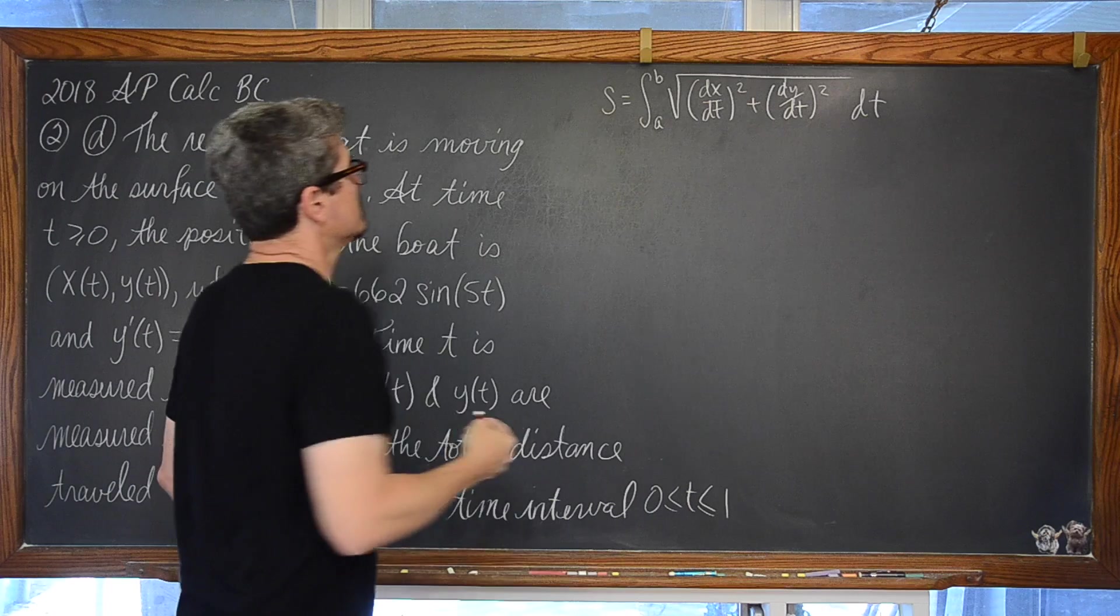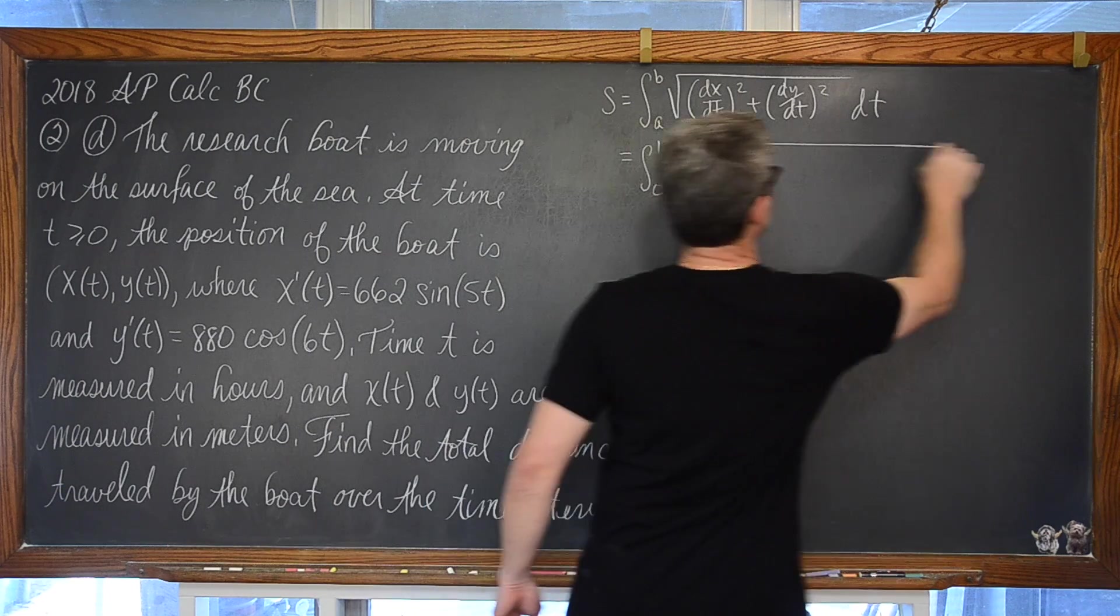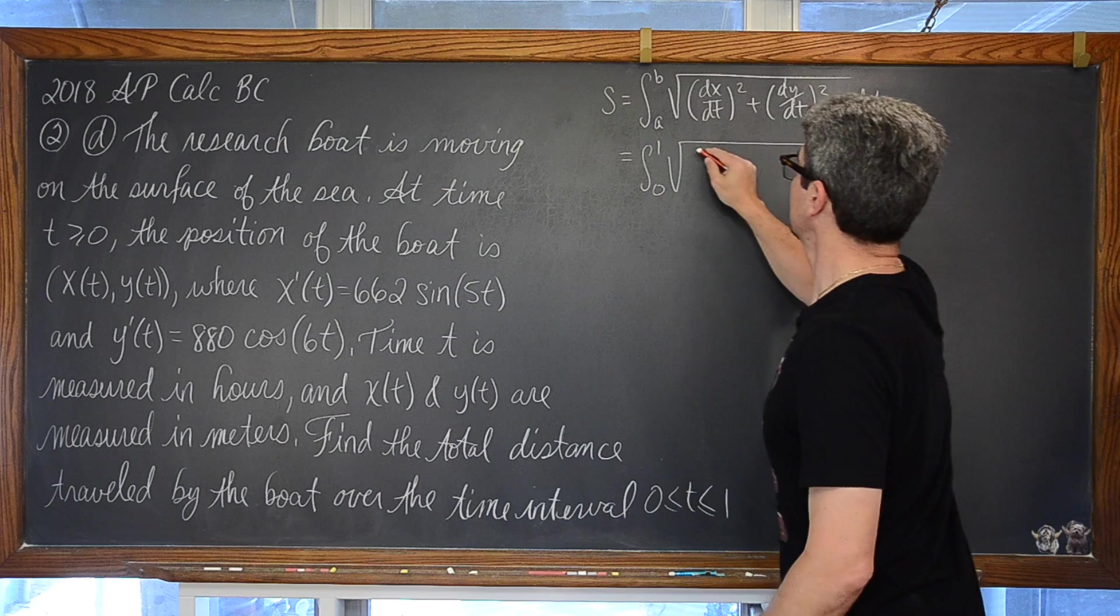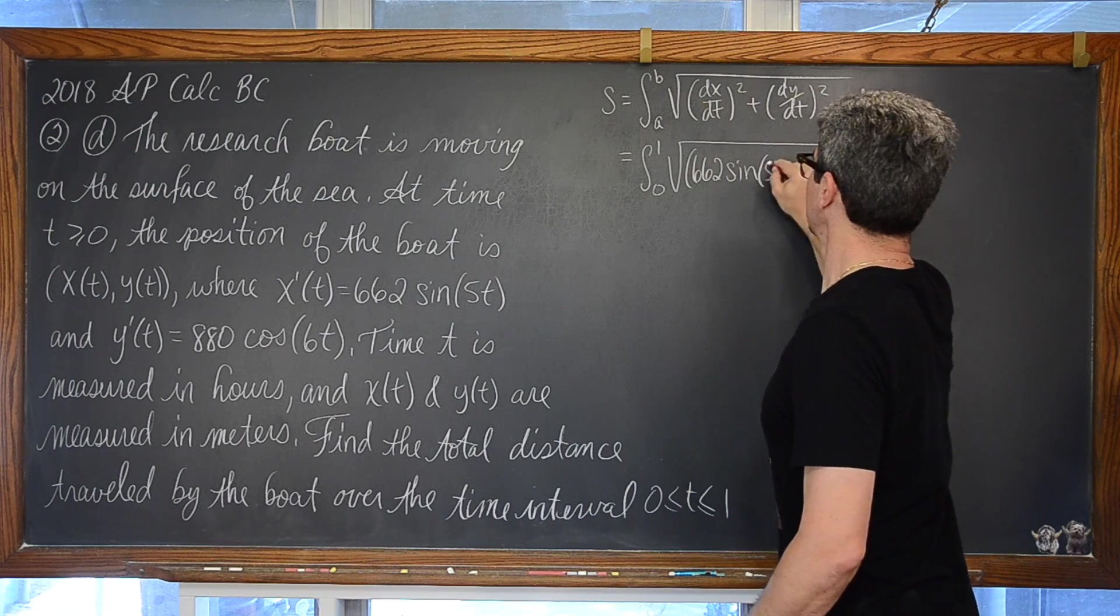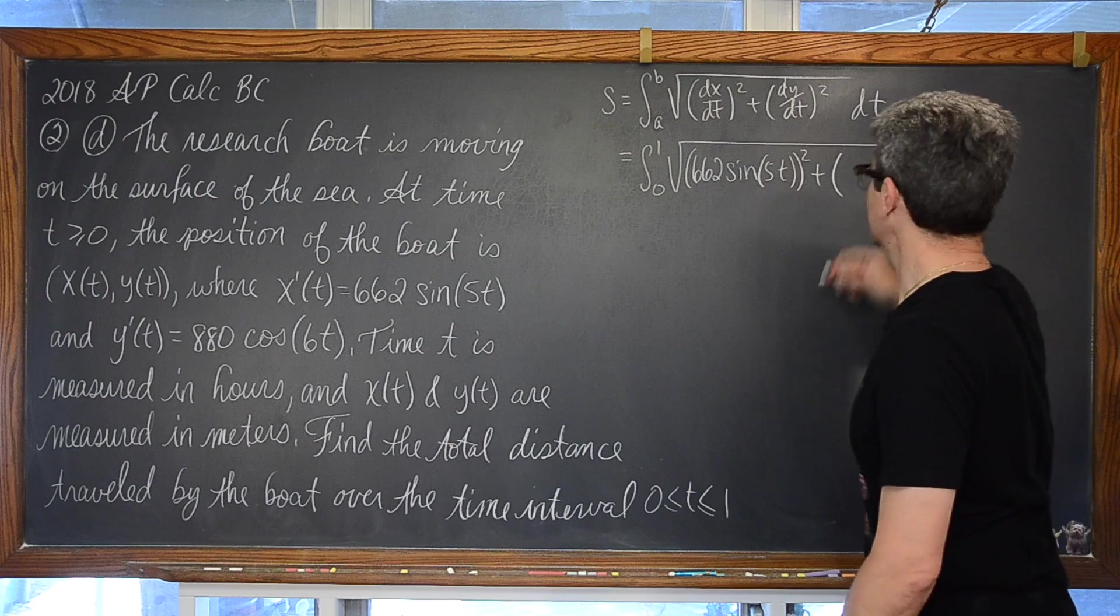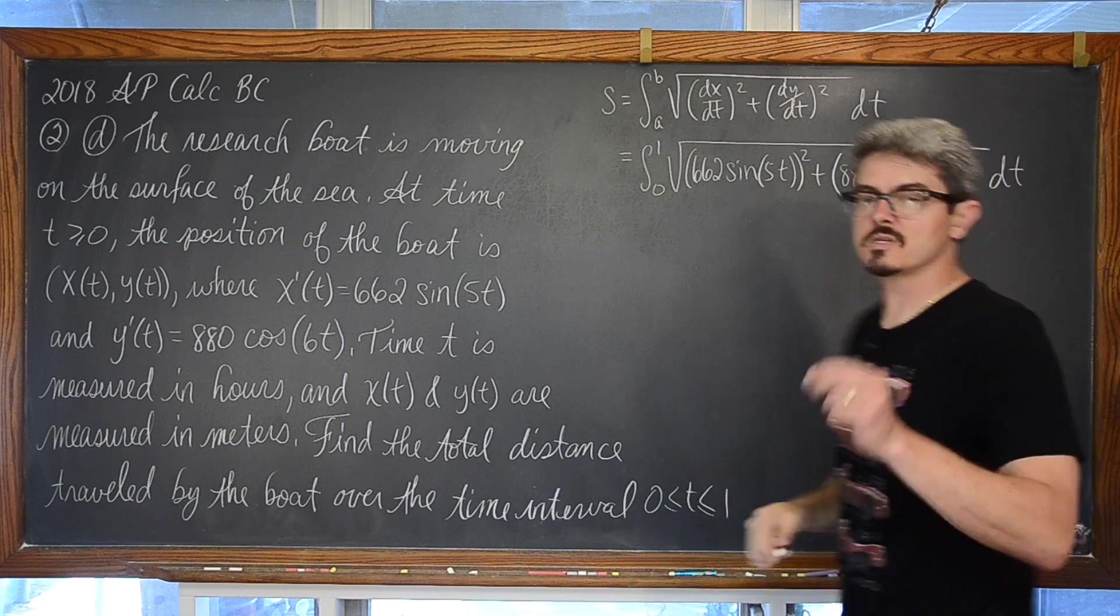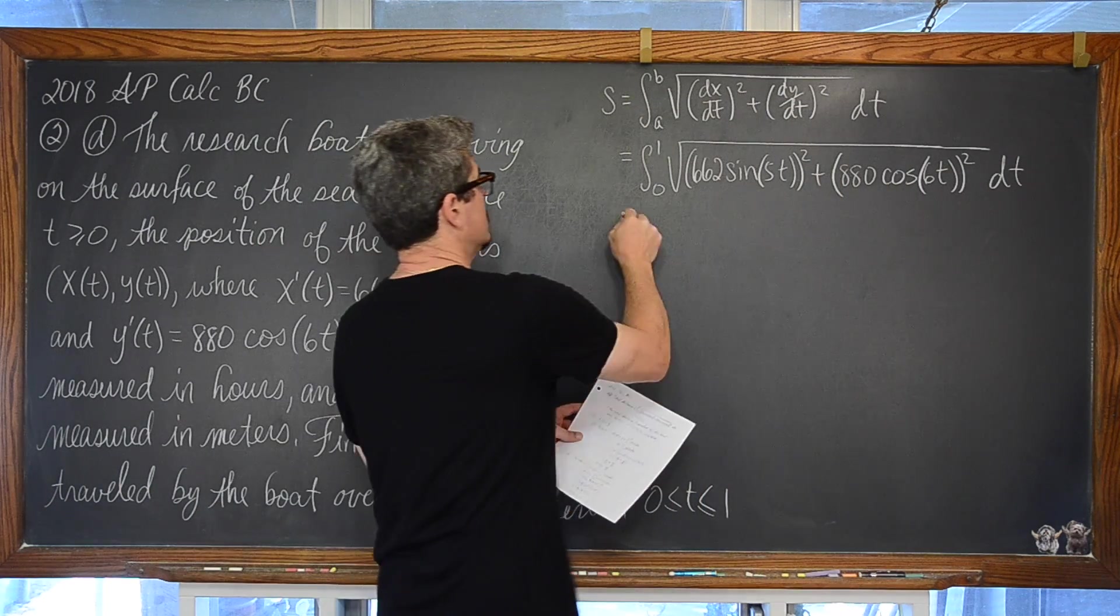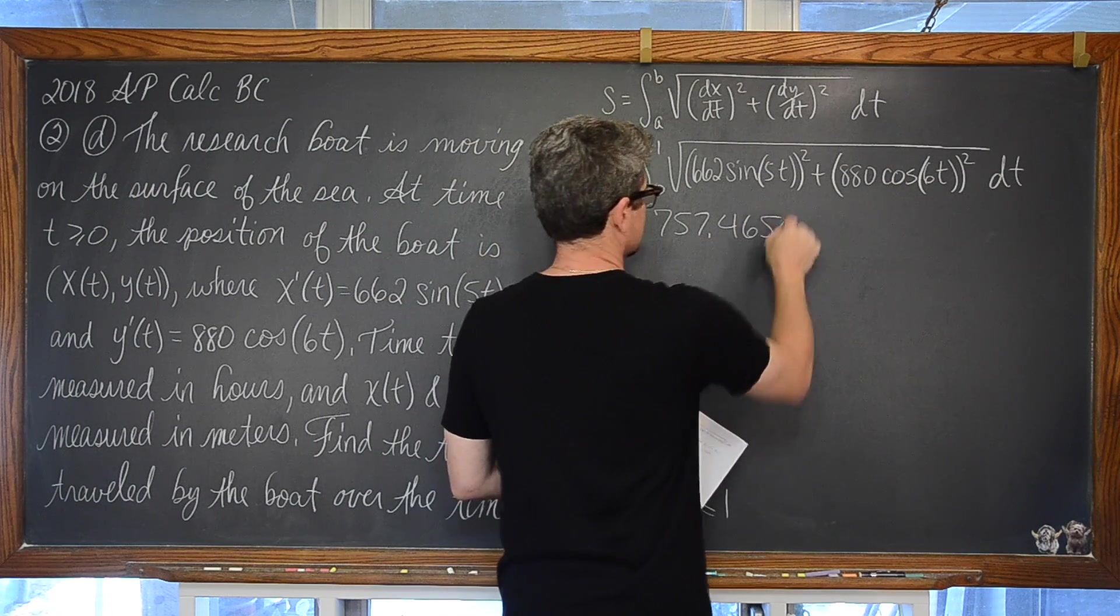Okay. Well, we want that arc length between the time period of 0 to 1, and we have our x prime here of 662 times the sine of 5t squared. We have the derivative of y with respect to t, 880 cosine of 6t squared dt. Just get that typed into your calculator correctly, and when you do, you are going to get the fact that that is equal to 757.465.